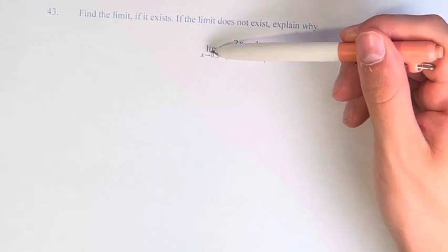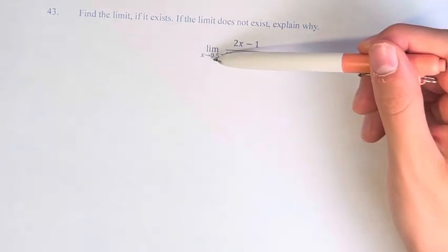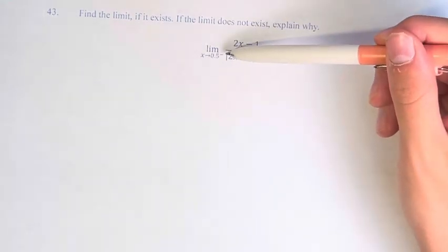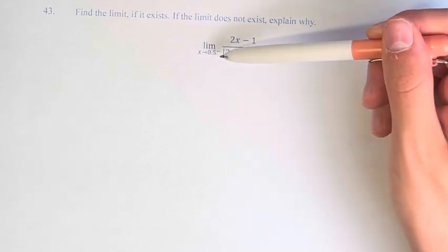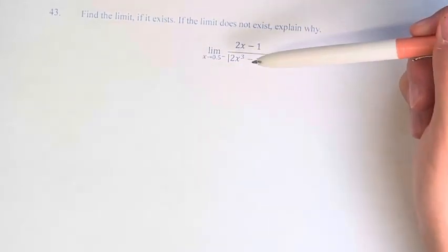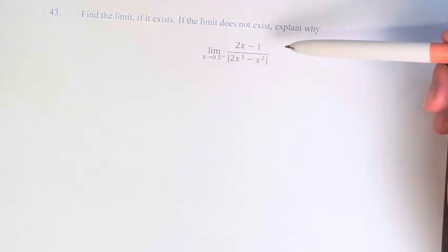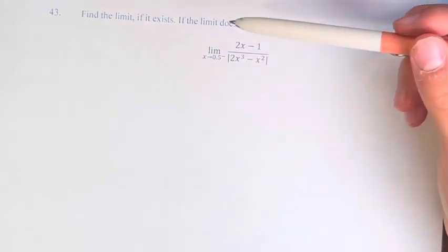If we're approaching 0.5, at 0.5, 2 times 0.5 cubed minus 0.5 squared, you plug this in, you're going to be dividing by 0. So obviously we can't plug in 0.5 directly, so we're going to have to do some limit laws.